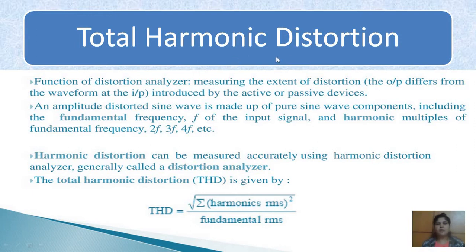Let us talk about total harmonic distortion. A non-linear system produces harmonics of an input sine wave. The harmonics consist of waves with frequencies which are multiples of the fundamental of the input signal. Suppose our input signal is f, then the output harmonics are multiples of the fundamental frequency — that is 2f, 3f, 4f, and so on.